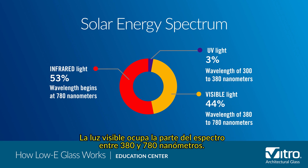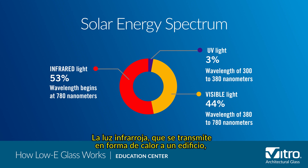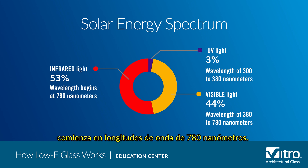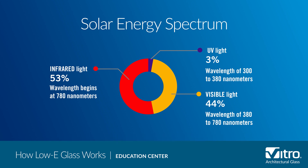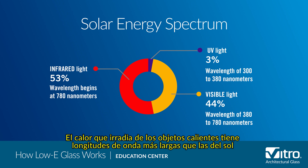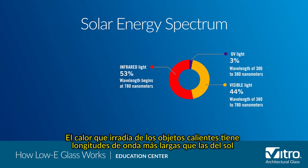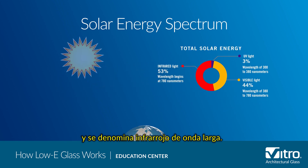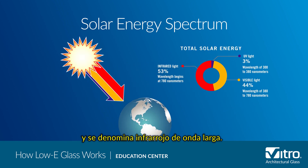Visible light occupies the part of the spectrum between 380 and 780 nanometers. Infrared light, which is transmitted as heat into a building, begins at wavelengths of 780 nanometers. Solar infrared is commonly referred to as shortwave infrared. Heat radiating off of warm objects has longer wavelengths than the sun, and is referred to as long-wave infrared.